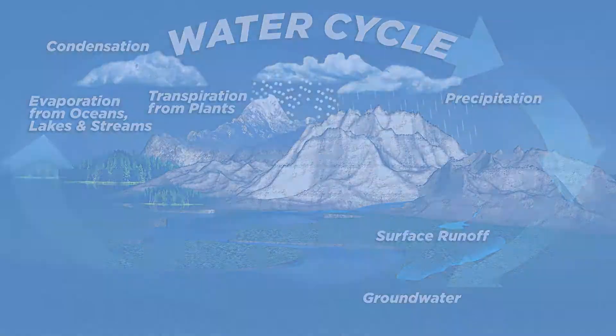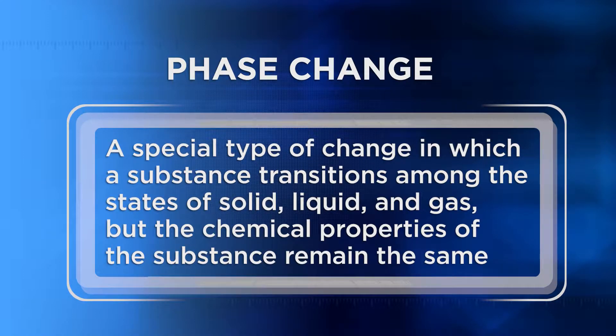What I'm describing here is phase changes. A phase change is a special type of change in which a substance transitions among the states of solid, liquid, and gas, but the chemical properties of the substance remain the same. Now we'll take a closer look at solids, liquids, and gases, which are all phases of matter. The cycling of matter always involves energy, which might be heat, as we're about to learn in our classroom.